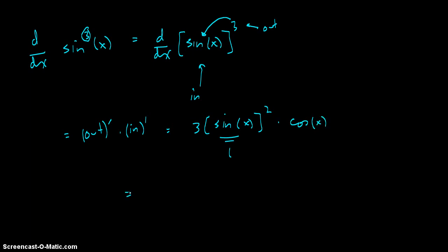So using the less clunky notation that we originally started with, this is equal to 3 times sine squared x times cosine x.